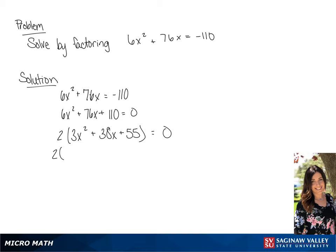Now we're going to factor what is in the parentheses into two binomials. Our first terms are going to be 3x and x.